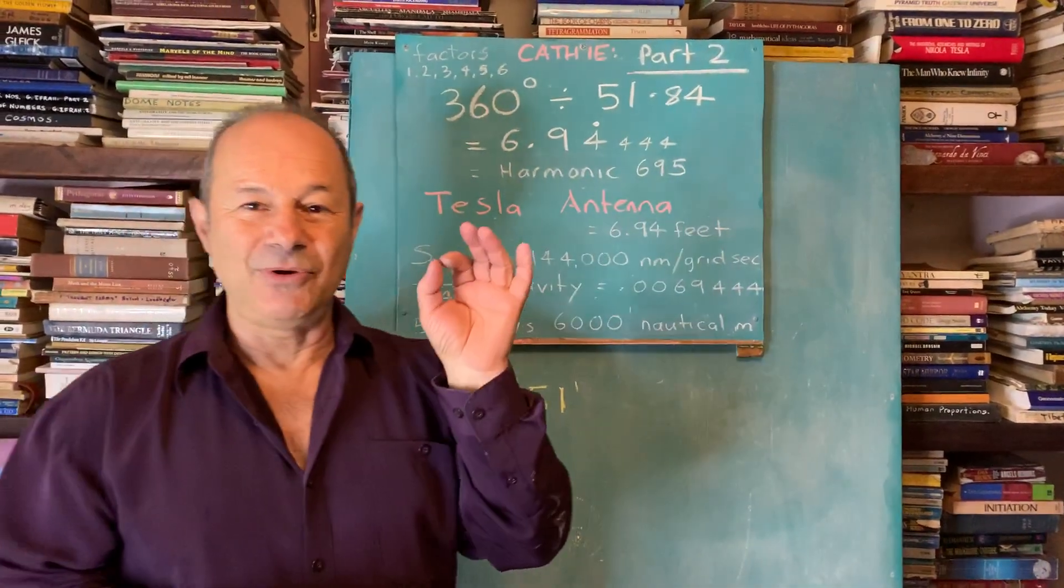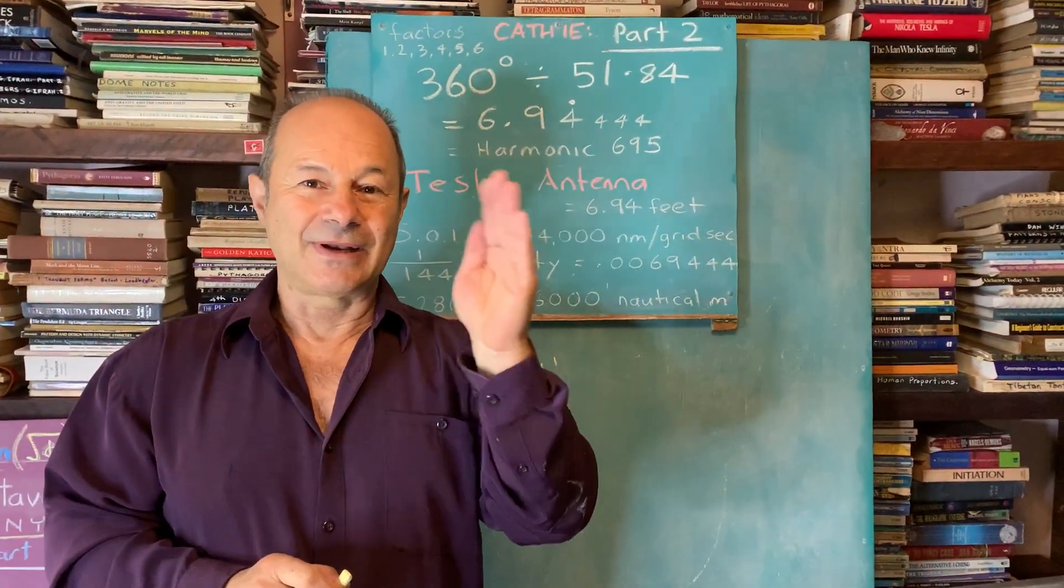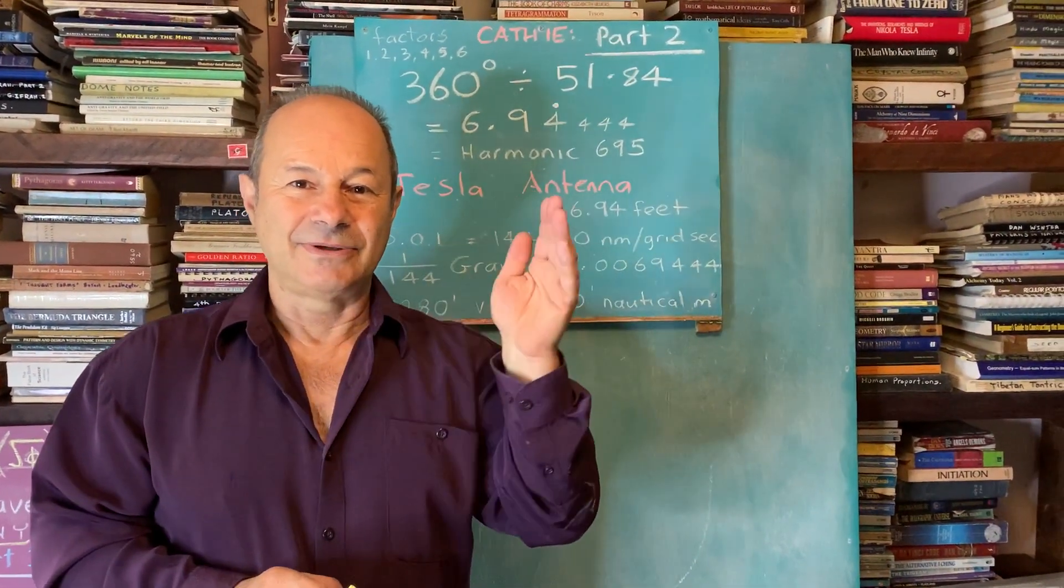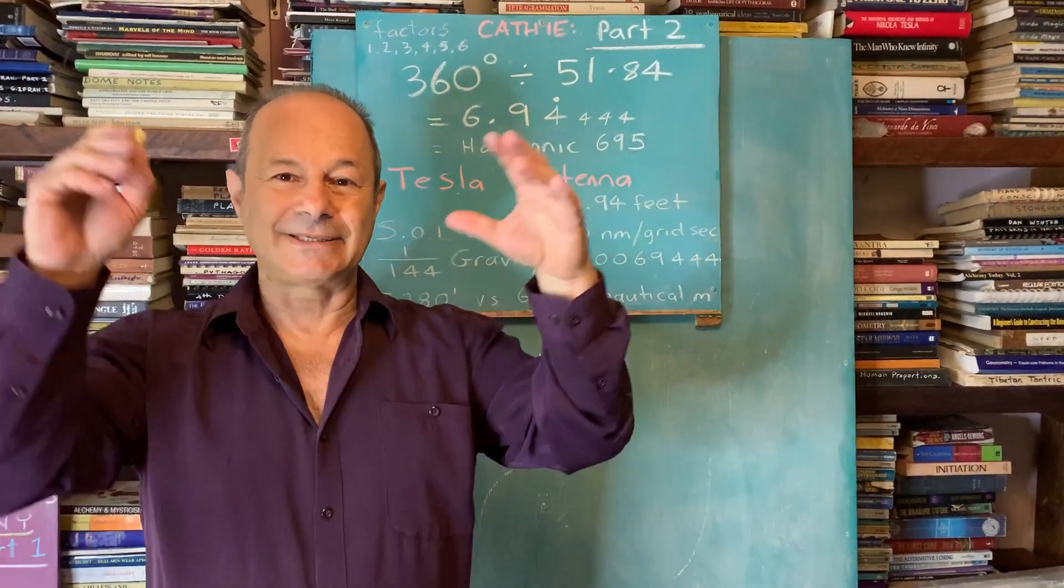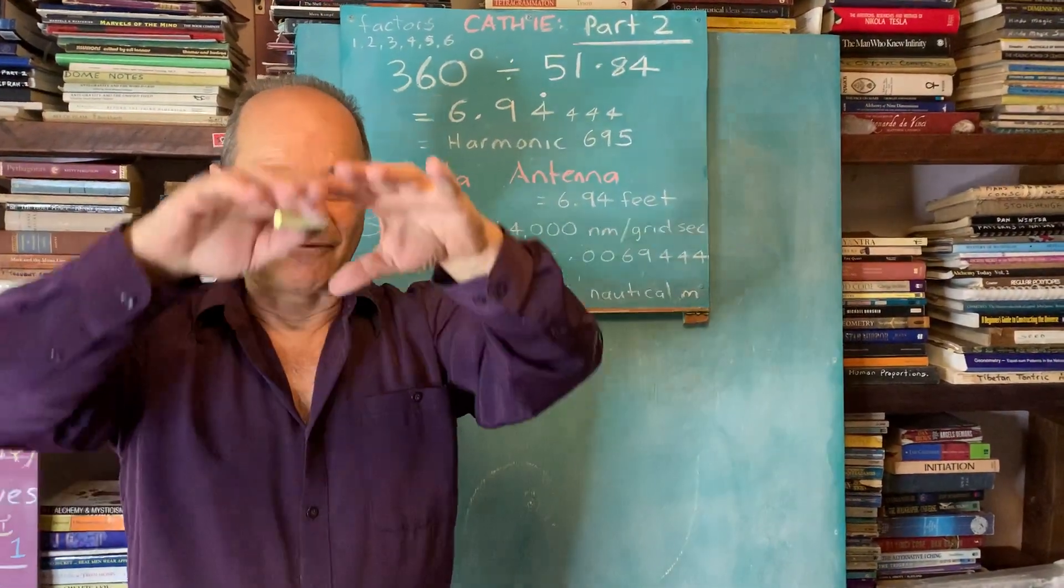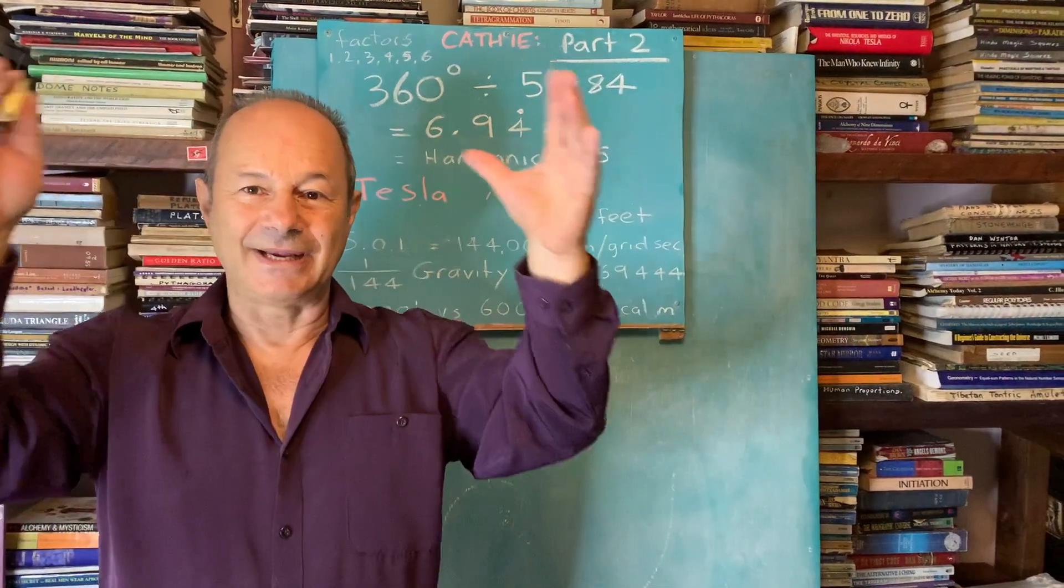All it is, is moving a decimal point to the left or to the right, to the micro and the macro. It's connecting the galactic to the atomic. The image that it creates is the torus.